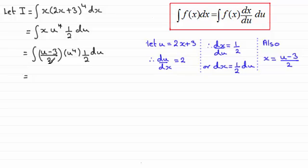All I need to do is just clean it up. And I can see here I've got a half times this other half here, that's going to give me a quarter. Being a constant I can pull that out the front of the integral, and that just leaves me with u to the power 4 multiplied with the u minus 3, and that's integrated all with respect to u.